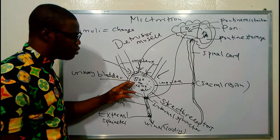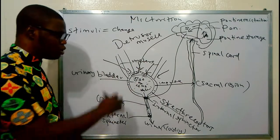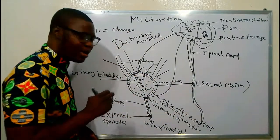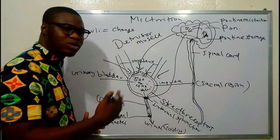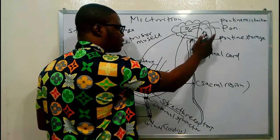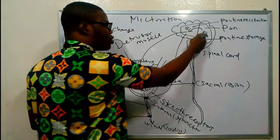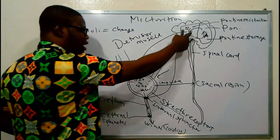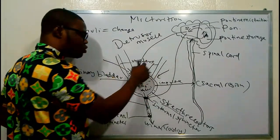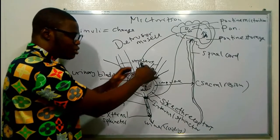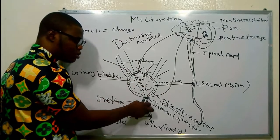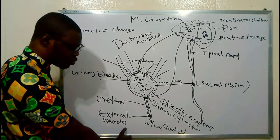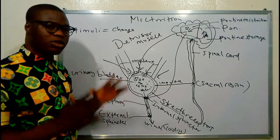Quick recap: when the urinary bladder is filled with urine of about 300 to 400 mL, the stretch receptors on the wall of the bladder sense the stretch and send the message to the sacral region of the spinal cord. The impulse then ascends to the brain. If the person is not ready, it is stored in the pontine storage center; if ready, it crosses into the pontine micturition center, which sends impulses to the detrusor muscle to squeeze and to the internal sphincter to relax. With conscious effort the external sphincter opens and urination occurs.